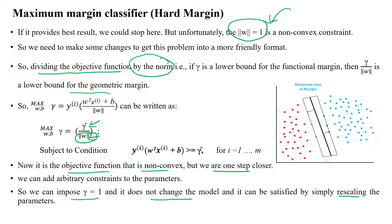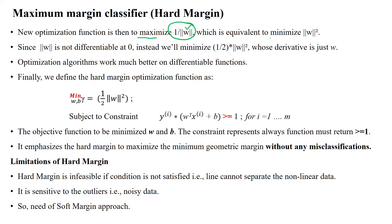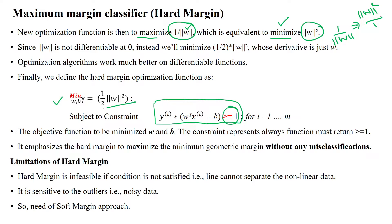Decreasing the denominator value while maximizing the parameter automatically creates the possibility of decreasing the margin. To avoid that, we convert the maximization problem into a minimization problem by flipping the equation: 1 divided by norm w becomes norm w squared divided by 1. So the minimization equation becomes: minimize one-half norm w squared, subject to the constraint that it is always greater than or equal to 1. The objective function is minimized with respect to w and b, and the constraint emphasizes the hard margin classifier to maximize the distance between the margins without any misclassification.